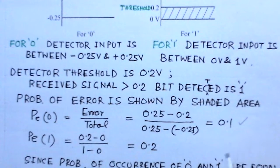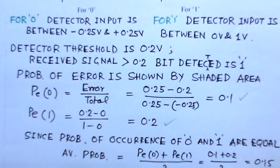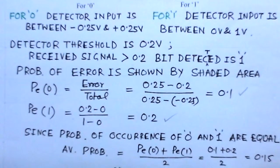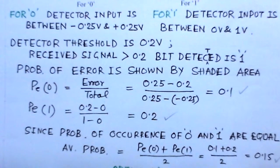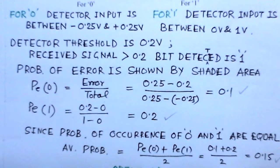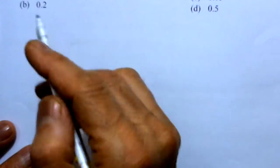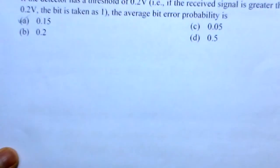The probability of error for detection of 0 and the probability of error for detection of 1 are averaged by dividing by 2. This gives the average probability of 0.15. That corresponds to option A. So the average bit error probability is 0.15, which is option A.